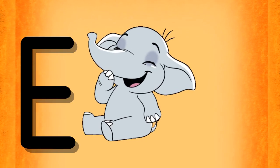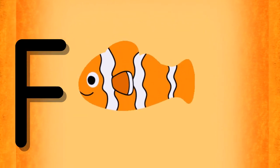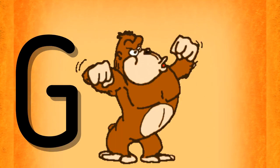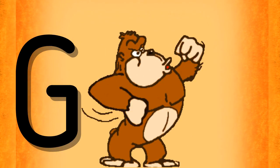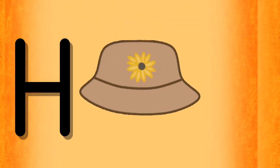E is for Elephant, E-E-Elephant. F is for Fish, F-Fish. G is for Gorilla, G-G-Gorilla. H is for Hat, H-H-Hat.